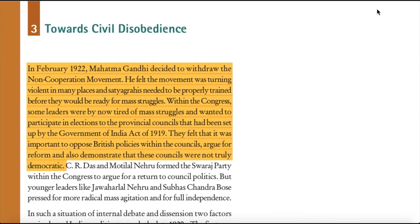Towards Civil Disobedience. In February 1922, Mahatma Gandhi decided to withdraw the non-cooperation movement, feeling it was turning violent in many places and that Satyagrahis needed to be properly trained before they would be ready for mass struggles. Within the Congress, some leaders were by now tired of mass struggles and wanted to participate in elections to the provisional councils set up by the Government of India Act of 1919. C.R. Das and Motilal Nehru formed the Swaraj Party within the Congress to argue for a return to council politics.